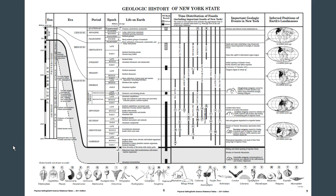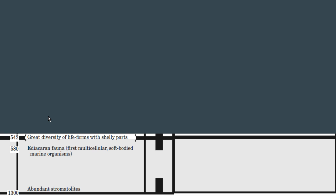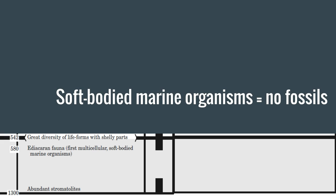Another thing of interest in life on Earth is abundant stromatolites, happening about 1,300 million years ago. And this first multicellular soft-bodied marine organisms - an interesting idea, this soft-bodied marine organisms. Do you think you get a lot of fossils with that? Soft-bodied? Not until you get great diversity of life forms with shelly parts, the shelly parts that can be preserved in rocks. What type of rocks? Sedimentary rocks give us the fossils that give us that life record that can be preserved and examined. Soft-bodied marine organisms equals no fossils.